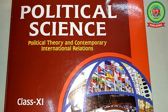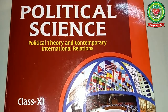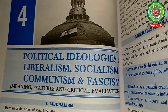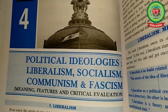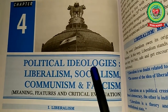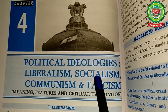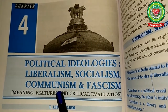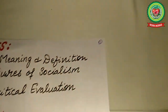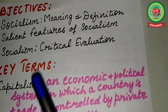Hello students, welcome to Plus One Political Science class. Today I will continue with Lesson 4, that is Political Ideologies. Under this, there are four ideologies: liberalism, socialism, communism, and fascism. The objectives of today's class are: socialism — its meaning and definition, salient features of socialism, and critical evaluation of socialism.